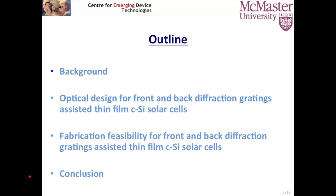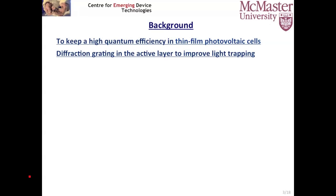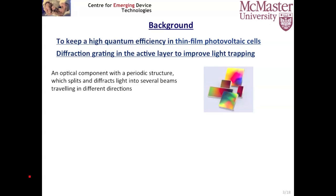Let's start from the background. To keep high quantum efficiency in thin film solar cells, light trapping schemes are considered and developed in past years. In my talk we are focused on diffraction gratings to actively improve the light trapping and therefore improve the final efficiency. The diffraction grating is an optical component with a periodic structure — it can split and diffract the incident light into several beams traveling in different directions.